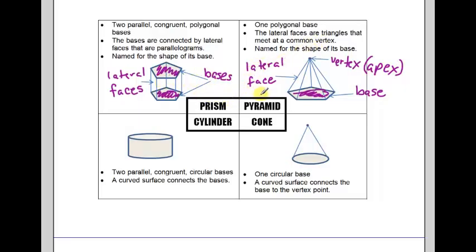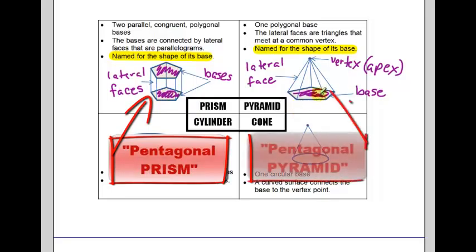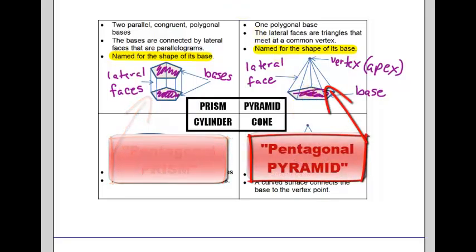Now both prisms and pyramids are named for the shape of their base. We name them for the shape of their bases. So these two examples, since the bases are pentagons, I would call this a pentagonal prism. And over here, I would call this a pentagonal pyramid. We'll practice that in just a minute.